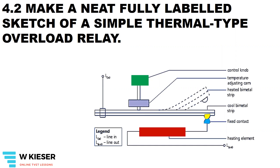Under overload conditions, when current exceeds the rated value, the bimetal strip will heat up, it will bend, and trip the contacts.